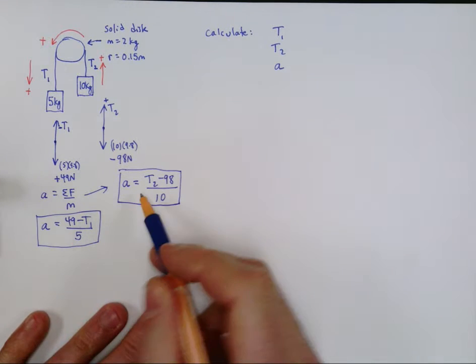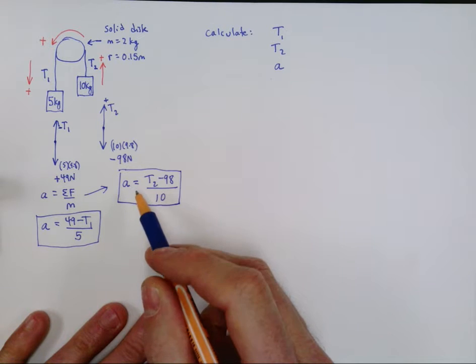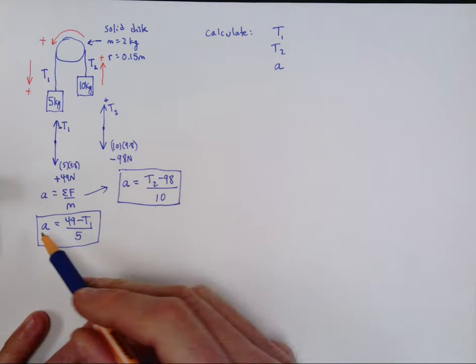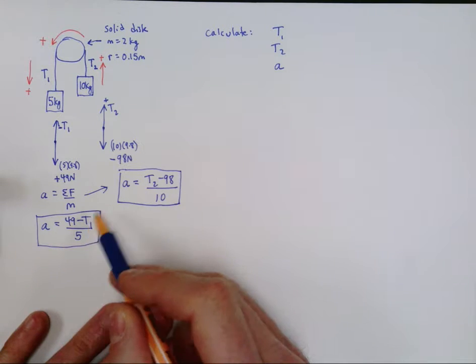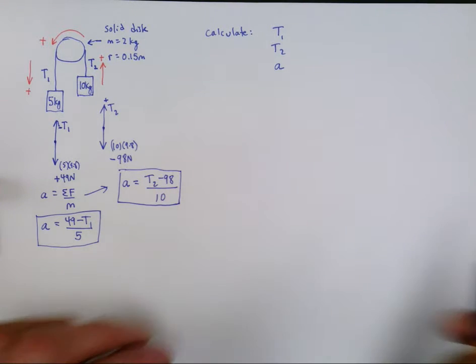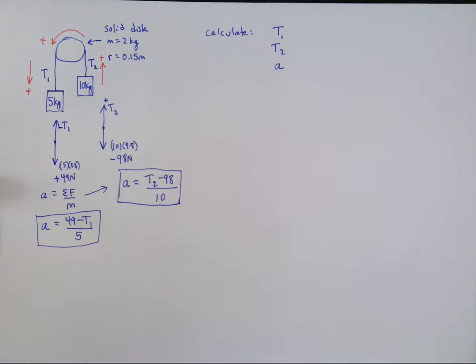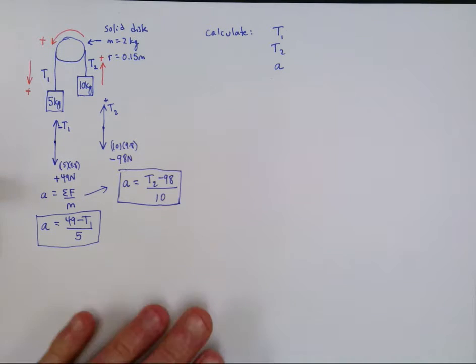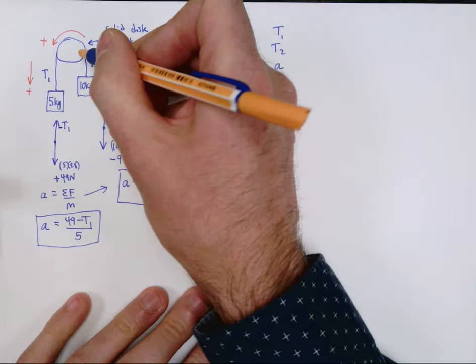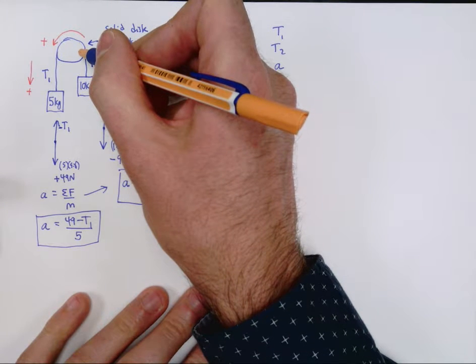Notice those two equations aren't enough, because we have three unknowns: a, T1, and T2. So the third equation is going to come from a free body diagram of the pulley.